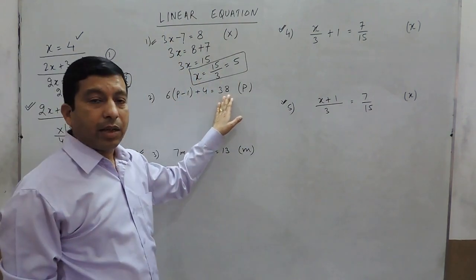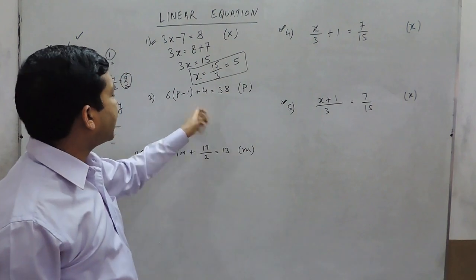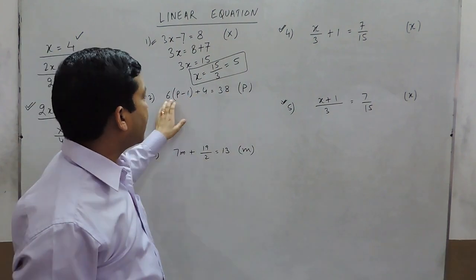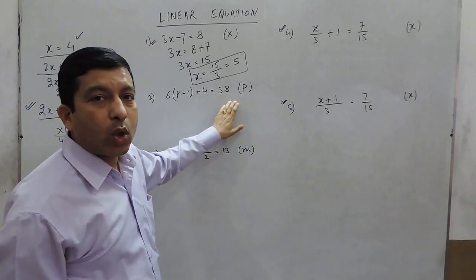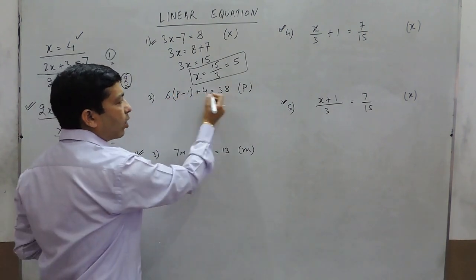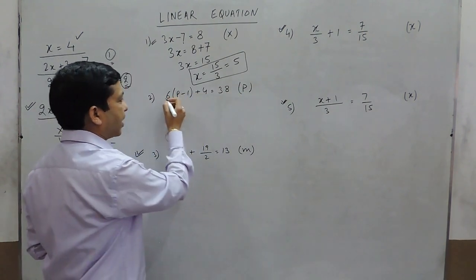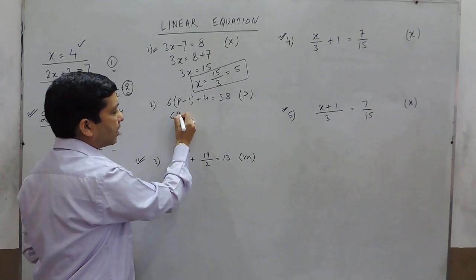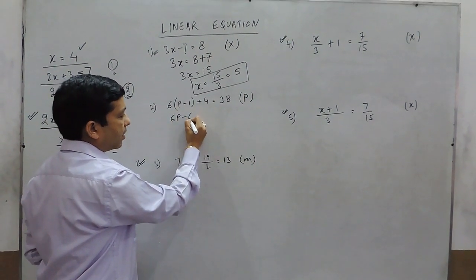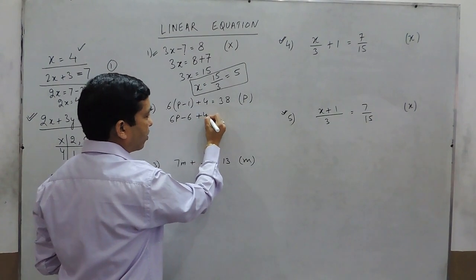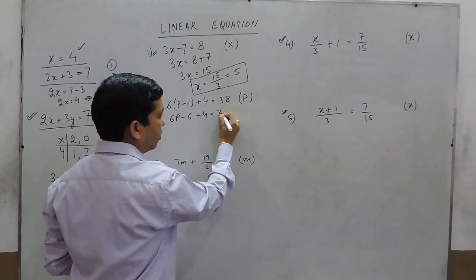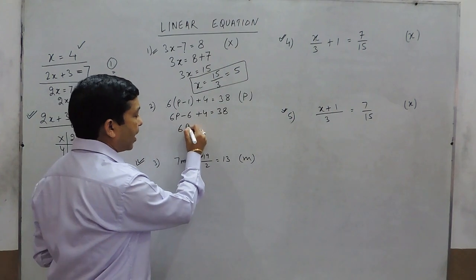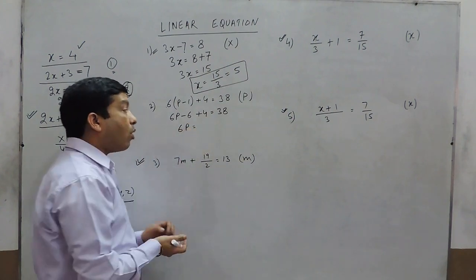In the same way, for one value of p this equation is true. To solve 6(p minus 1) plus 4 equals 38, we first expand: 6p minus 6 plus 4 equals 38. This is the first step.